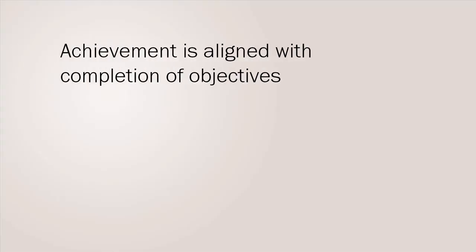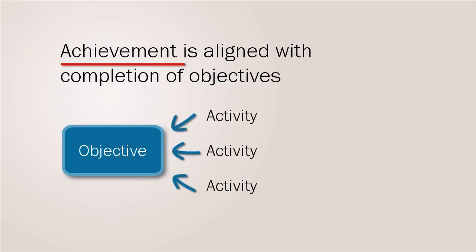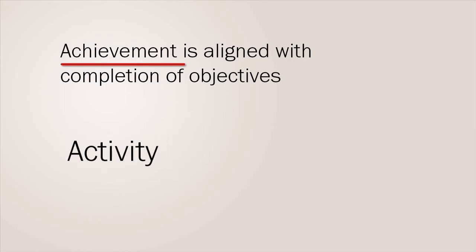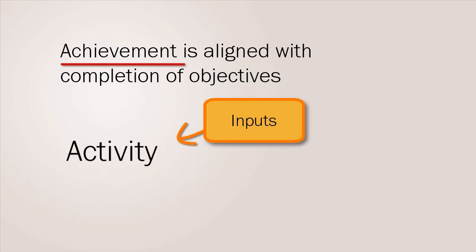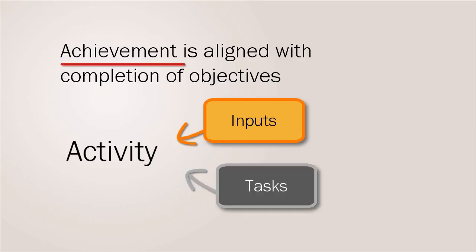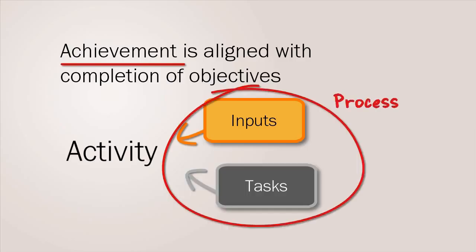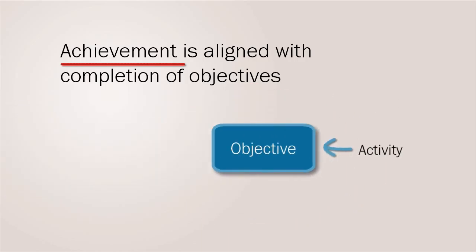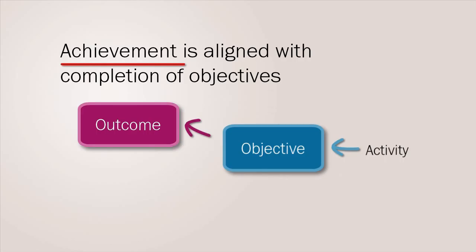In any plan or program, achievement is aligned with completion of objectives, and there are usually several activities that need to be carried out for an objective to be achieved. Each activity requires inputs such as finance, resources, etc., and for specific tasks to be completed. This is known as the process. As a result of process, activities and objectives are completed, and this in turn leads to an outcome and an impact.